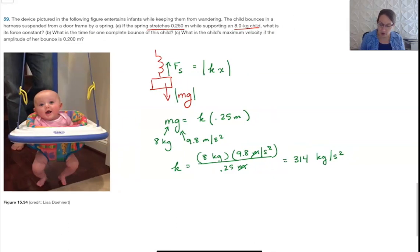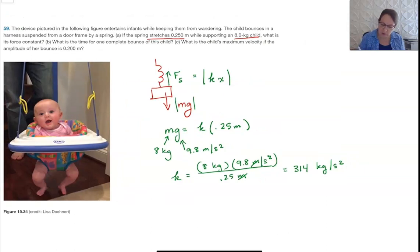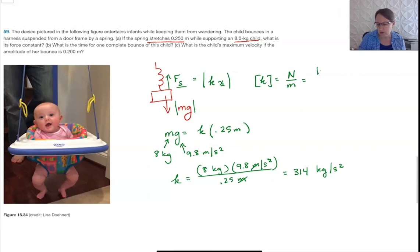Which is also the same thing as newtons per meter. So generally you say the units of the spring constant are going to be force divided by distance, newtons over meters. A newton is a kilogram meter per second squared, you divide by a meter so you get the same units there. Okay, so that's our spring constant.